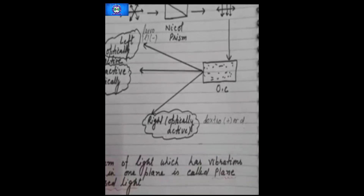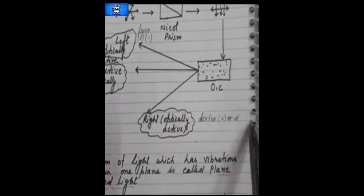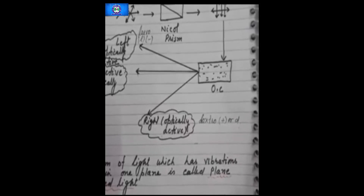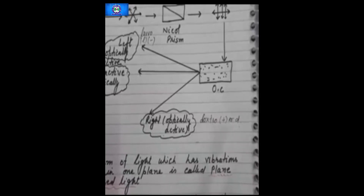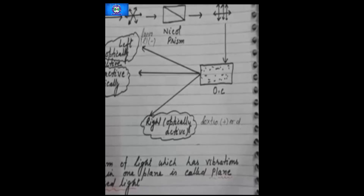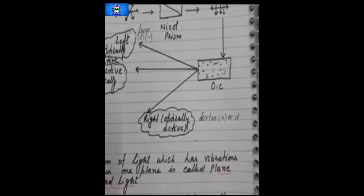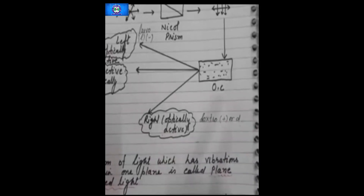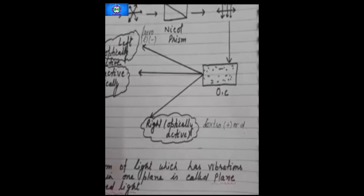To find out whether a compound is optically active or not, we should know about symmetry. An asymmetrical compound is always optically active. If all the groups attached to a carbon are different, such a carbon is known as an asymmetrical carbon, chiral carbon, or stereocenter. A molecule containing an asymmetrical carbon lacks all elements of symmetry.